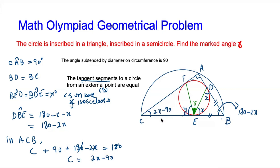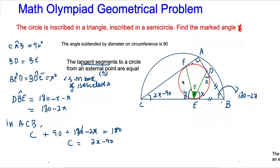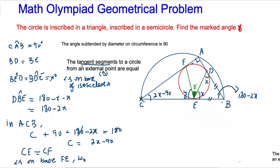Similarly, CE and CF are also equal lengths, because they are two tangent segments from external point C to the circle. Therefore CE equals CF, making triangle CEF isosceles. The base angles are equal: angle CFE equals angle CEF equals y degrees.